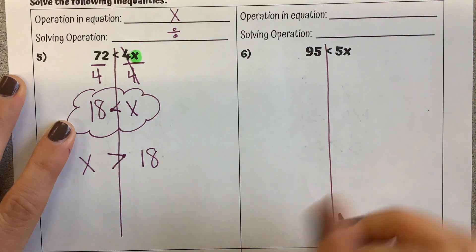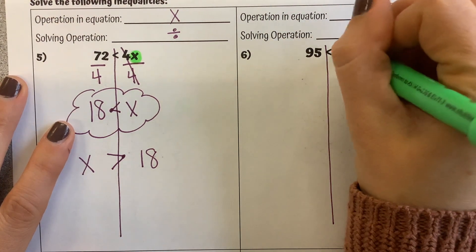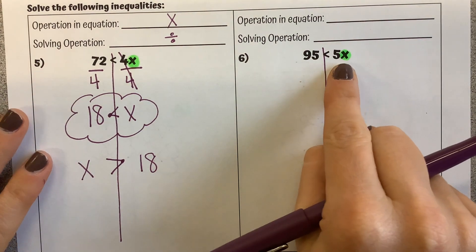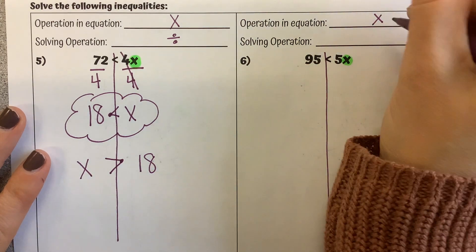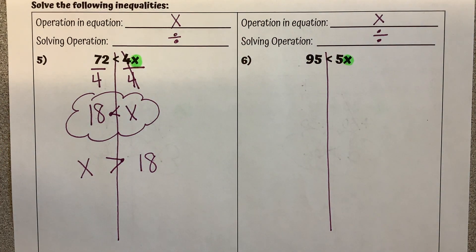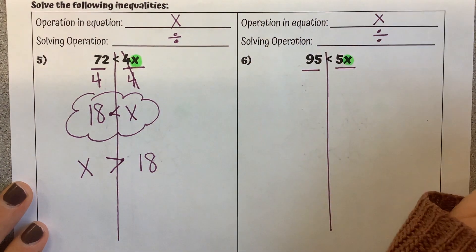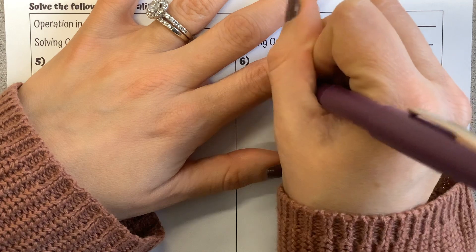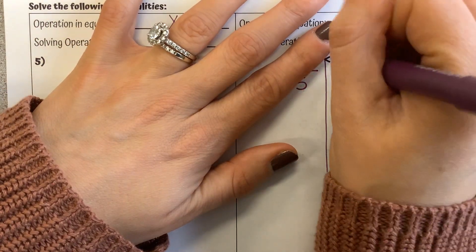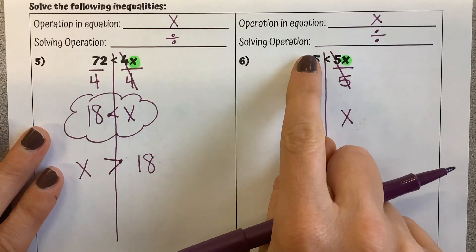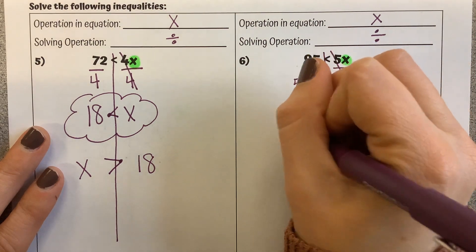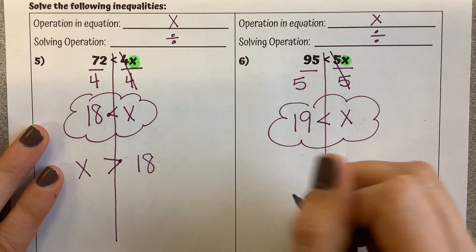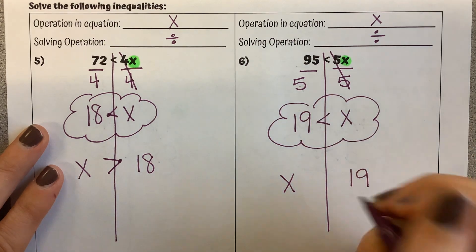Number six. Draw my line down my inequality symbol. Highlight my variable. I don't see a plus sign or a minus sign, and my number is right next to my variable, which means multiplication. So the opposite to solve is going to be to divide. We'll use a fraction bar instead of a division sign. X is being multiplied by 5, so the opposite is to divide both sides by 5. The 5s cancel each other out, we're left with just X. 95 divided by 5 is 19. Bring down my inequality symbol. I can leave my answer like this, or I can flip it — move my X to the left, 19 to the right, and flip my sign.